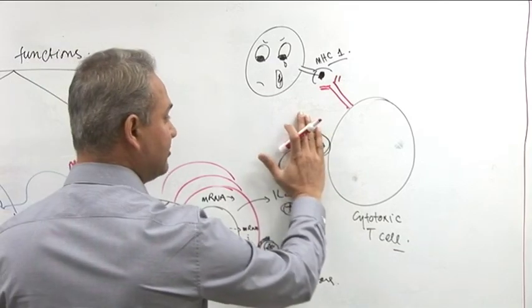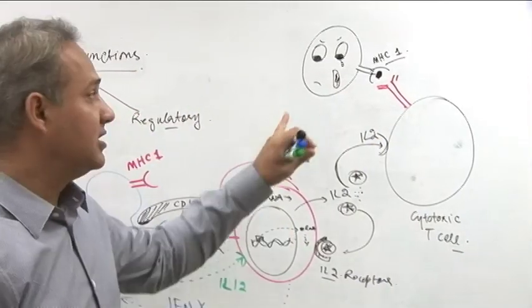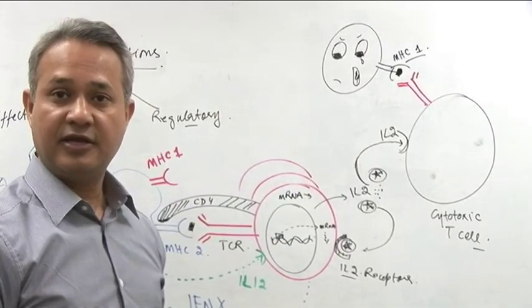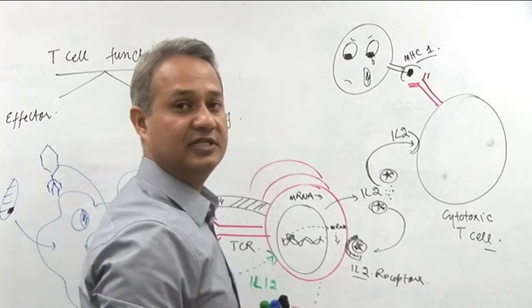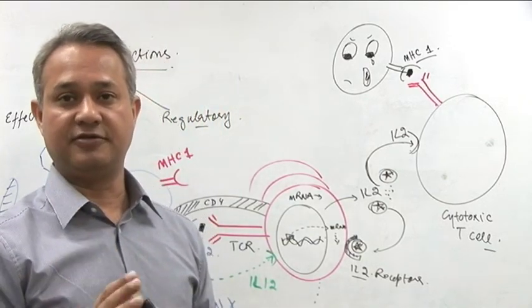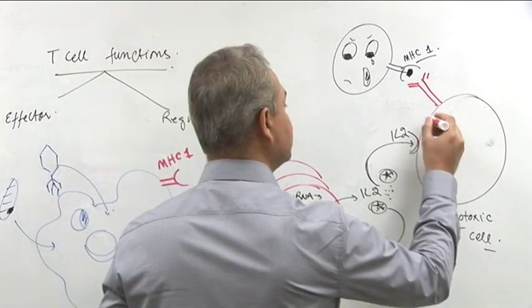Now is this, in the absence of IL-2, this cytotoxic T cell is doing nothing to this poor infected cell. But as soon as IL-2 reaches the cytotoxic T cell, cytotoxic T cell will become active. What is the function it is going to do?